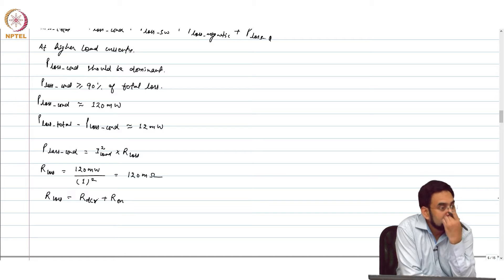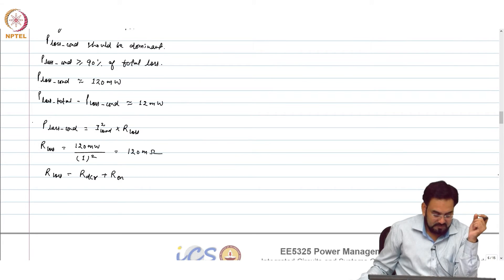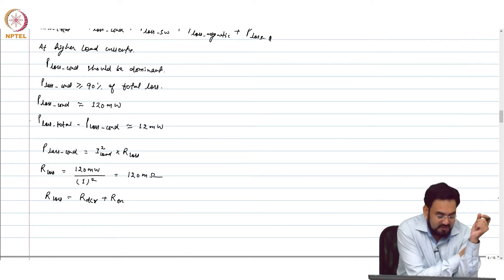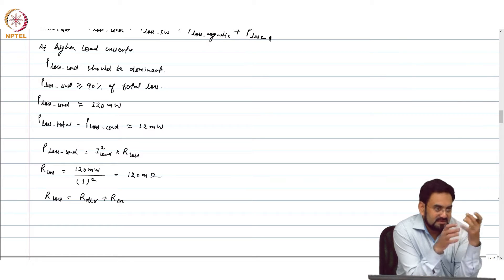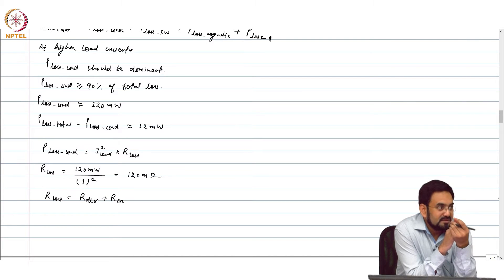Smaller R_on? But if you choose, let's say out of 120, you say that I will keep R around 20 milliohms and R_DCR 100 milliohms. So 20 milliohms means your FET size should be big. What will be losing here? The area and the switching losses, gate drive switching loss, because cap size will also be larger gate cap.